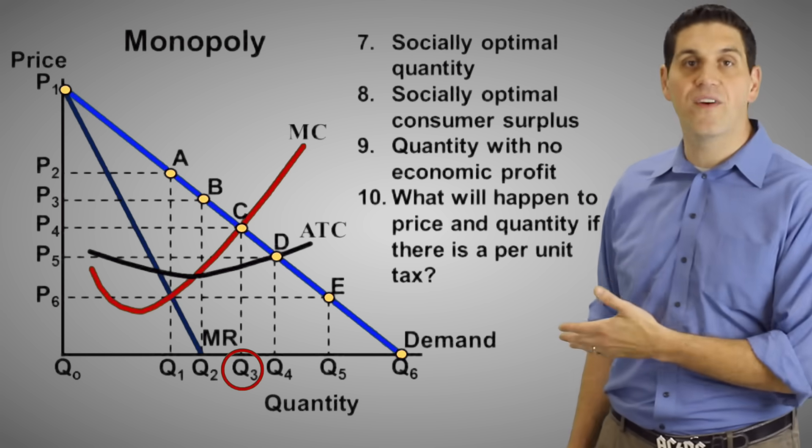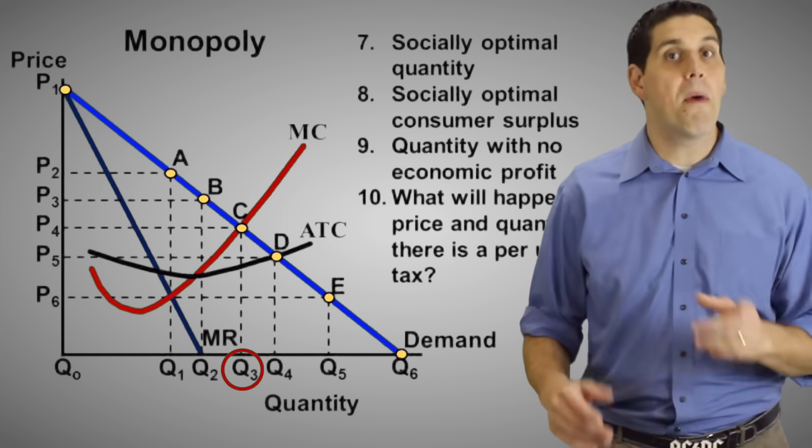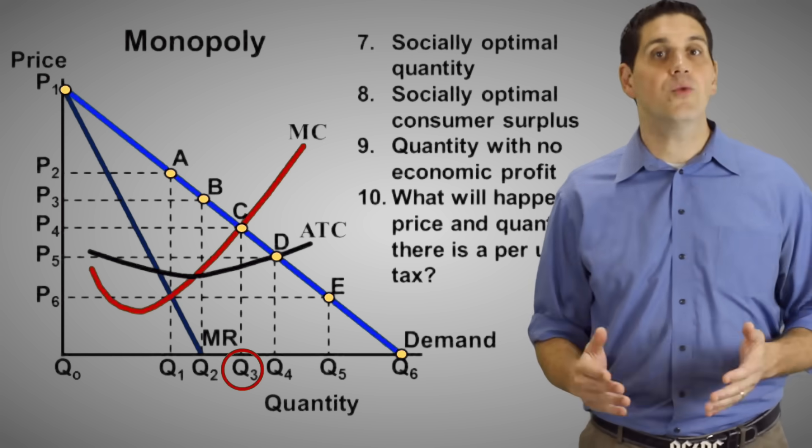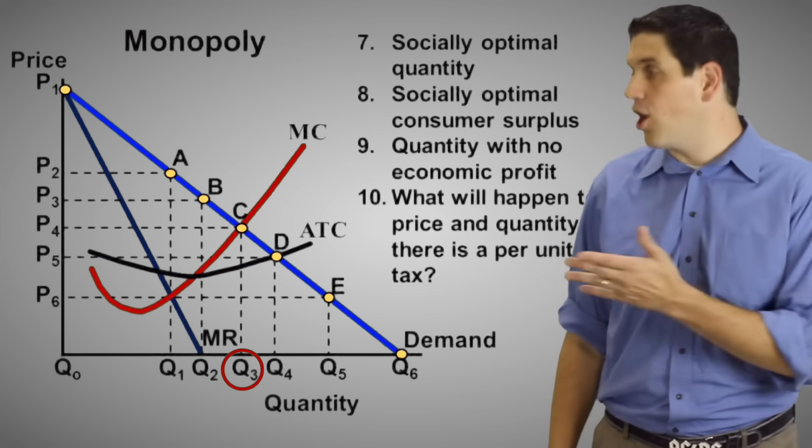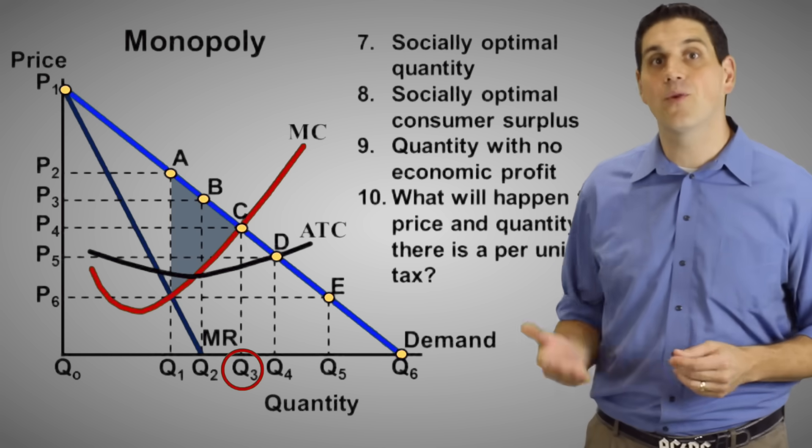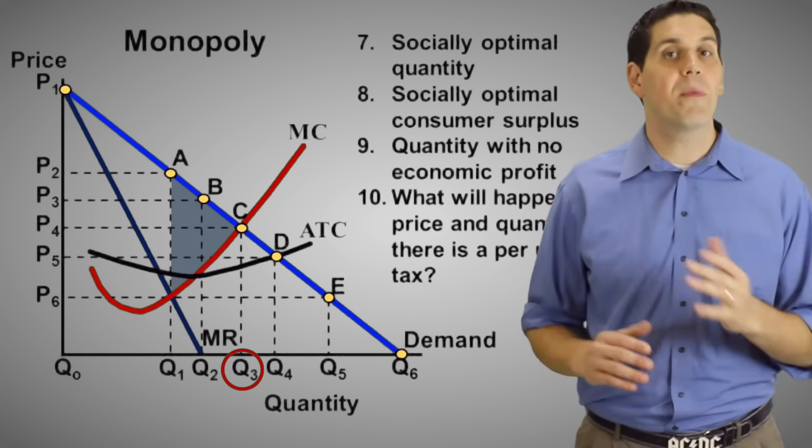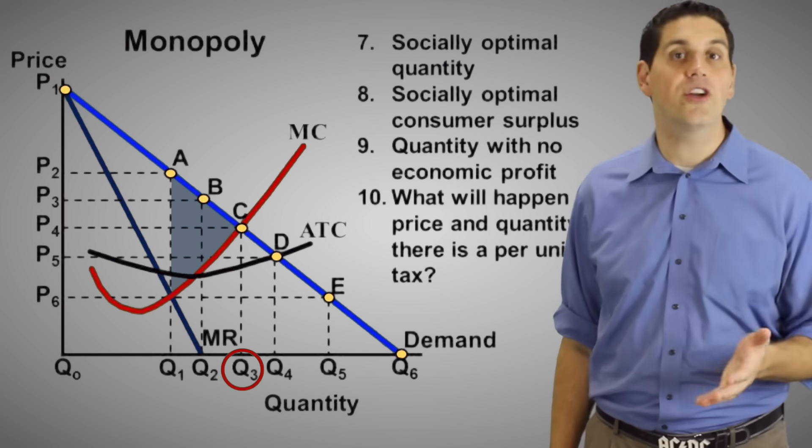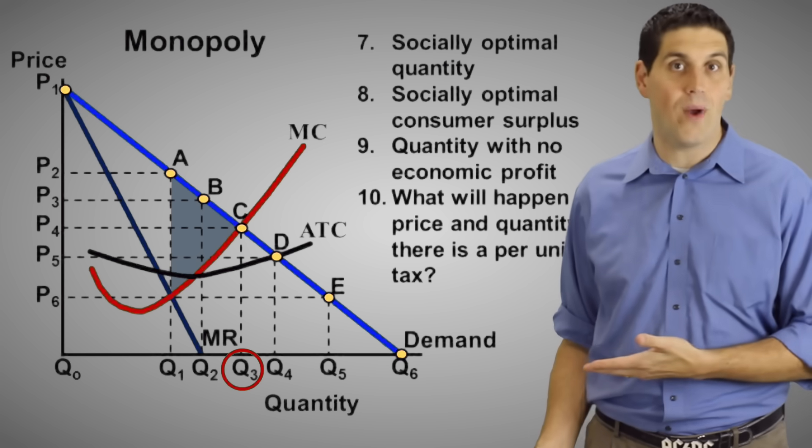When this monopoly maximizes profit, are they going to produce Q3? Well, no. Remember, we said they're going to produce Q1, and that's the reason why monopolies are inefficient. They cause deadweight loss. These are units society wants to produce, but the monopoly is not going to make them because they'd rather produce where MR equals MC. So a monopoly produces too little output and charges too high a price, causing deadweight loss.